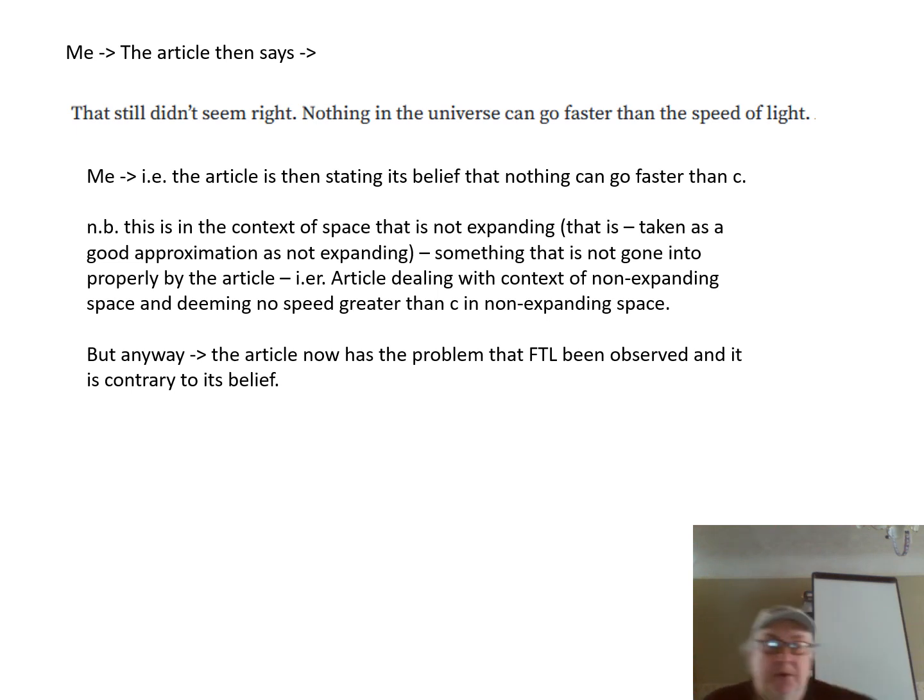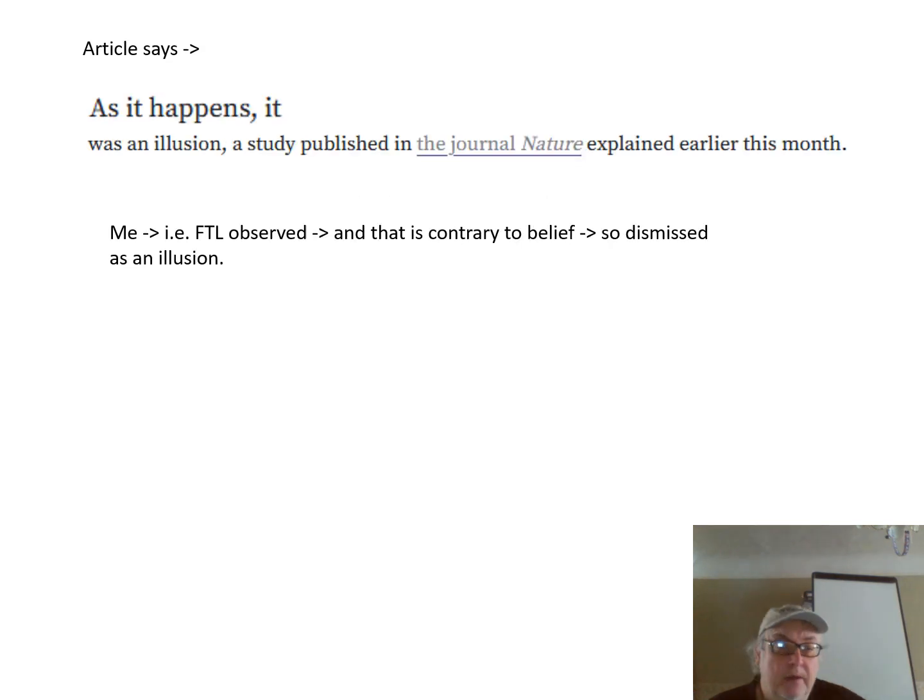The article then goes on to say that that didn't seem right. Nothing in the universe can go faster than the speed of light, i.e., the article is stating its belief that nothing can go faster than the light speed c. And mind you, again, this is in the context of space that is not expanding. The article says the following: as it happens, it was an illusion, a study published in the journal Nature explained. FTL, faster than light, is observed and that is contrary to belief, so it's dismissed as an illusion.